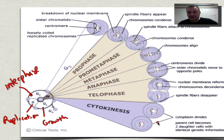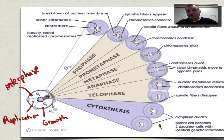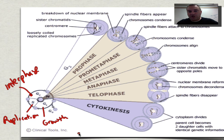And remember, in cytokinesis, that's when the cytoplasm is going to be split into two and you have two genetically identical daughter cells. So this is just a review of the eukaryotic cell cycle. Until our next episode, we're going to catch you on the flip side.